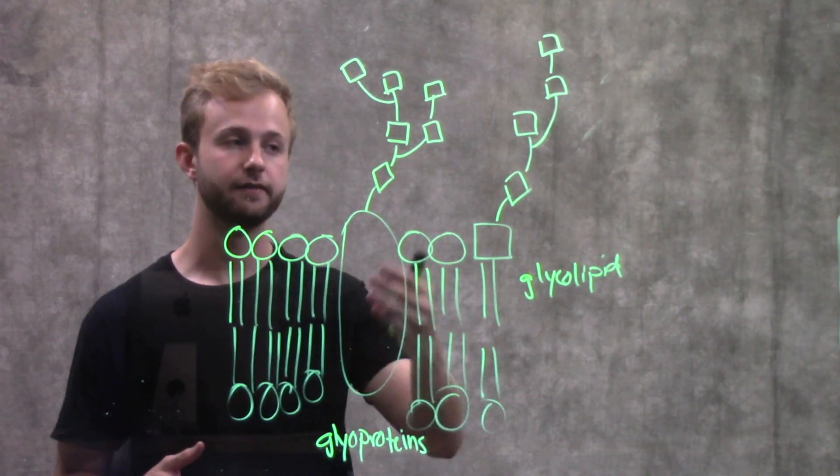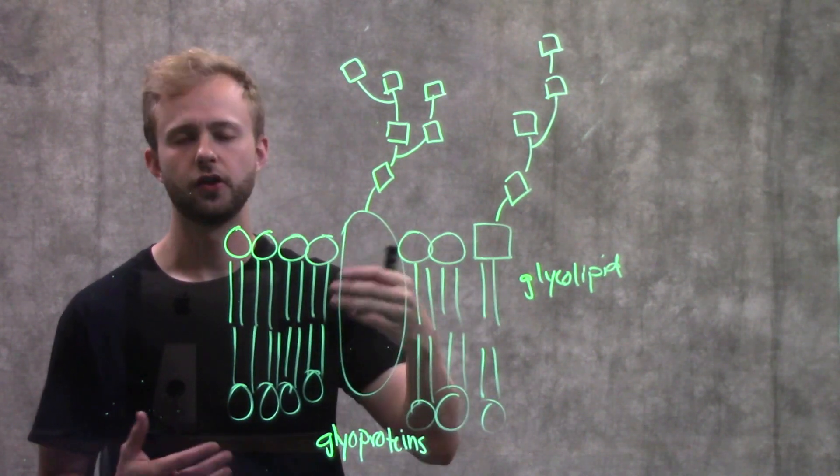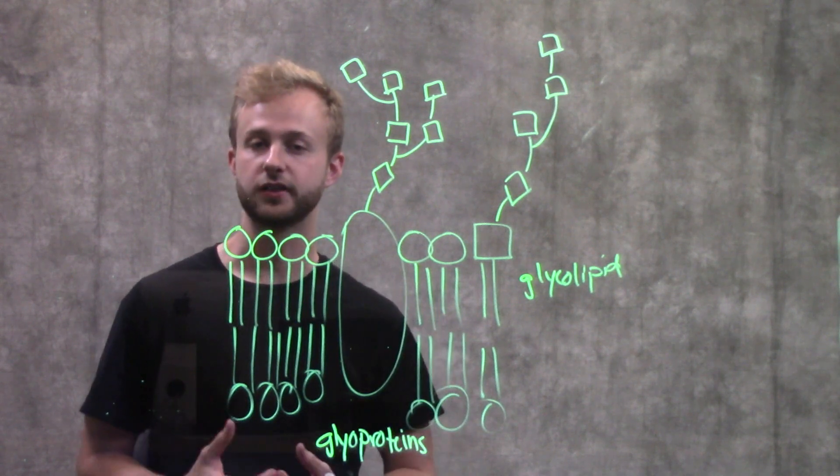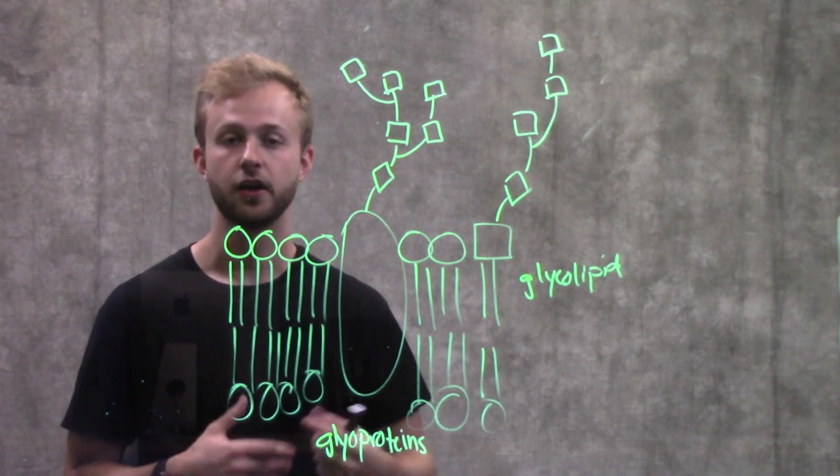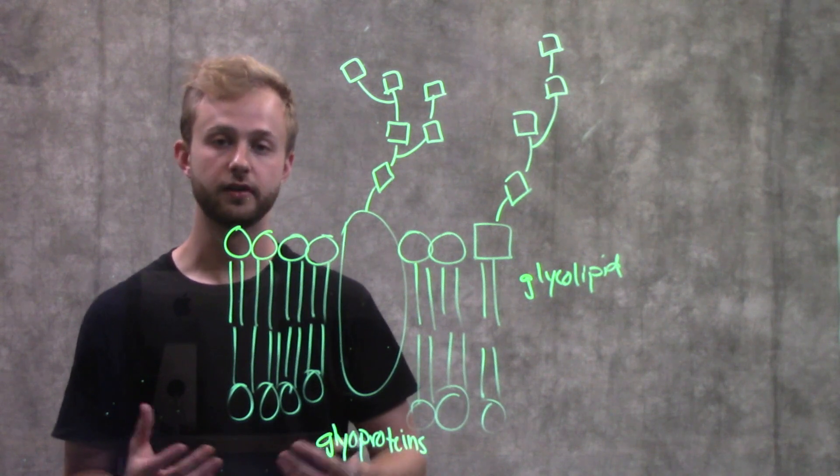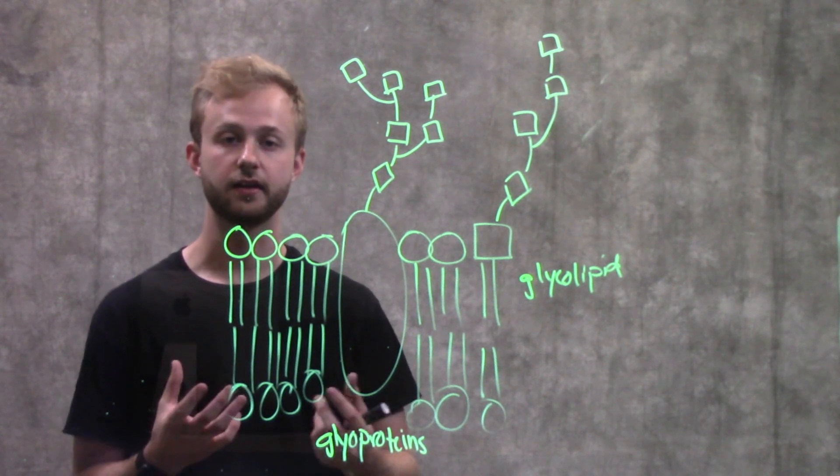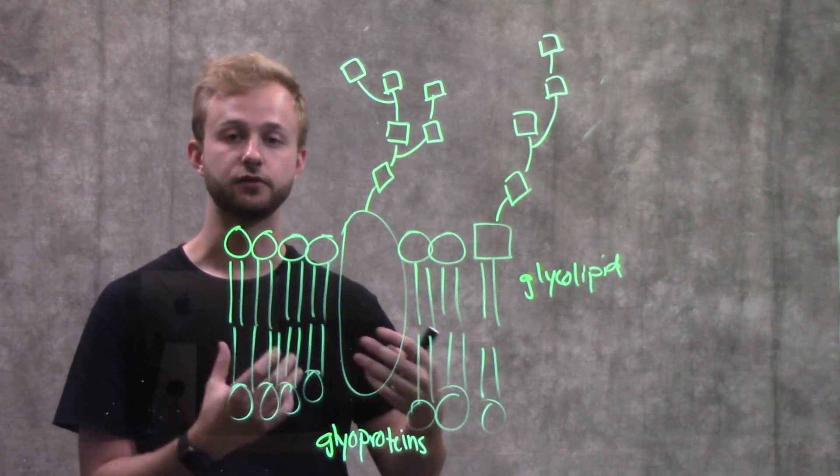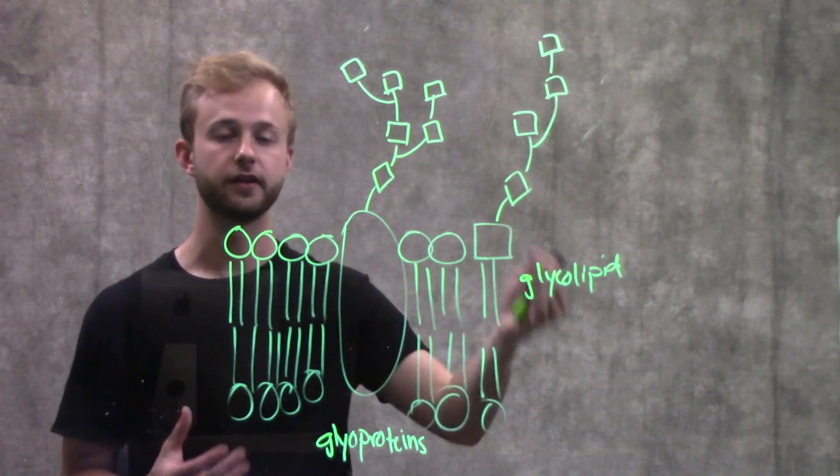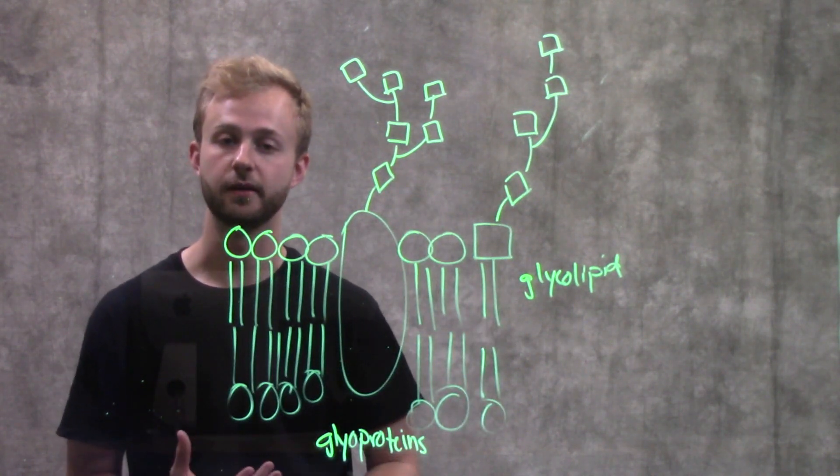If you don't have the right carbohydrate tag on a particular blood cell, if you get a blood transfusion with a type that is different than your own, then you have a reaction because your body recognizes those as foreign on the basis of the glycolipids and the glycoproteins in their membranes.